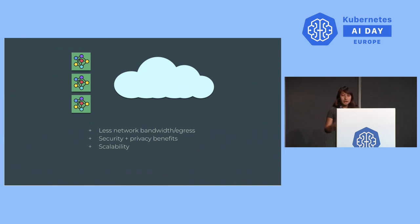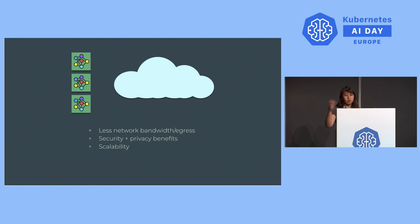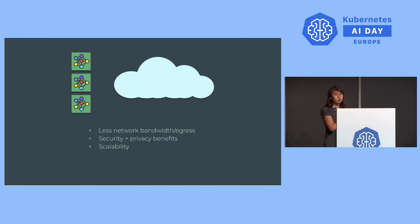And then lastly, you have scalability. If you have millions of connected devices, in the traditional model you send all that data to your cloud. But when you handle it per device, even if you have millions of devices, your cloud isn't impacted by all the inferences that need to be made on individual devices.